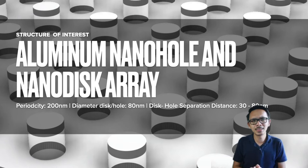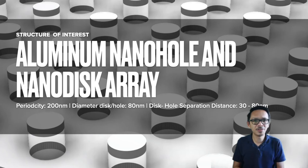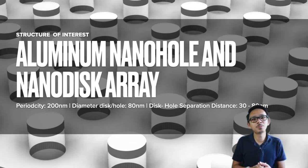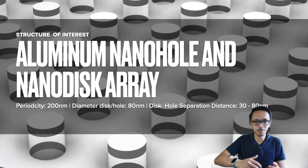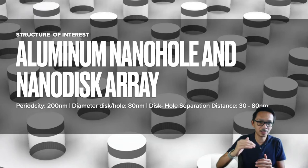We want to visualize the plasmonic color from the nanostructure. Because of that, we chose the aluminum hole and disc array as our structure of interest, with a configuration of 200 nanometers for the periodicity. The diameter for the disc and hole array is equal to 80 nanometers. Because the colors produced are highly dependent on the configuration, we try to change the separation distance between the disc and hole array from 30 to 80 nanometers.